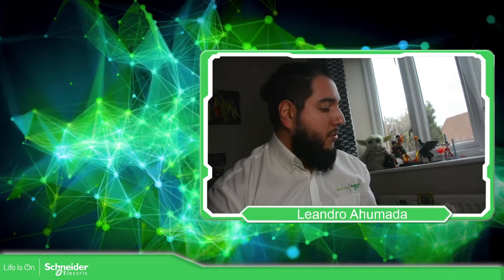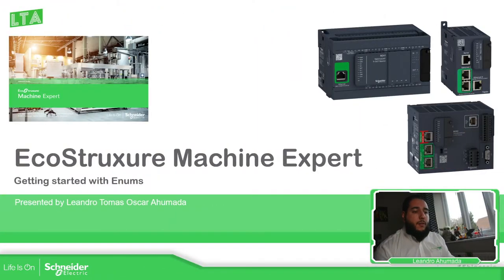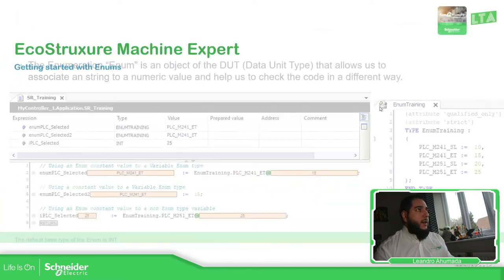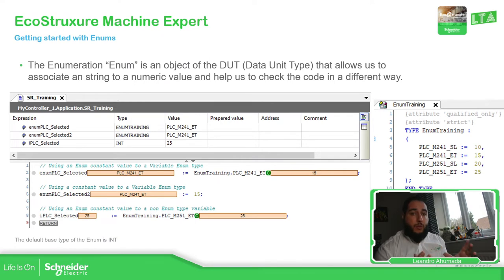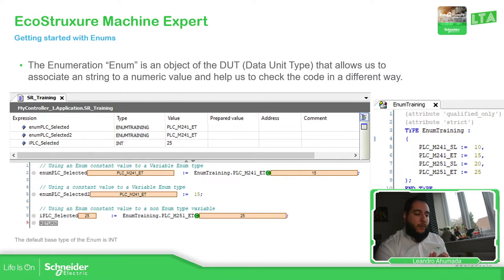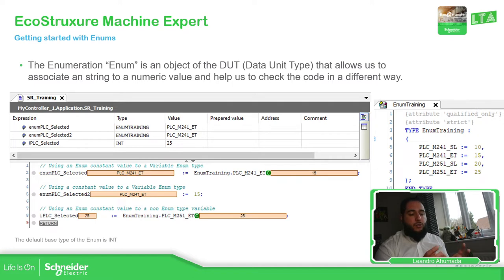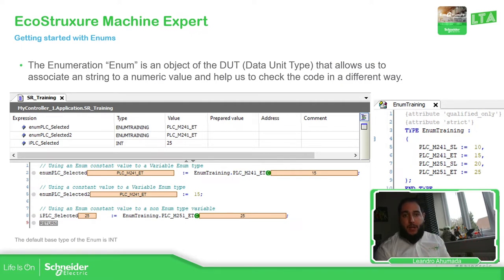So let's go to the presentation. Basically, there is an object type in the EcoStruxure Machine Expert called DUT, which is Data Unit Type. Inside this DUT we have the possibility to select the enum, which basically is the enumeration. This enumeration allows us to link or associate a string text with a numerical value.